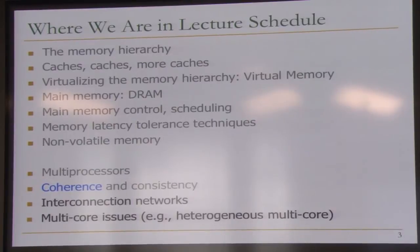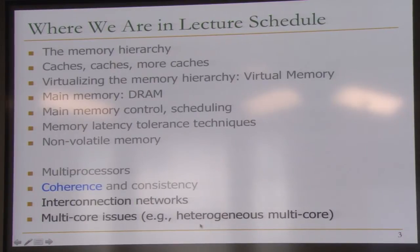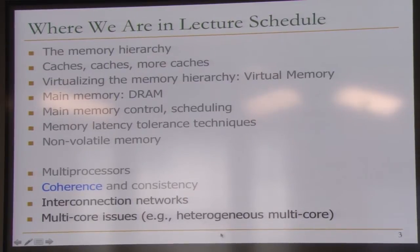This is where we are in the lecture schedule. We're going to finish coherence today and we may actually start asymmetry a little bit, because I think there is a good tie into it. Then we have interconnection networks and multicore issues left. We'll talk especially about heterogeneous multicore, which is asymmetric multicore.